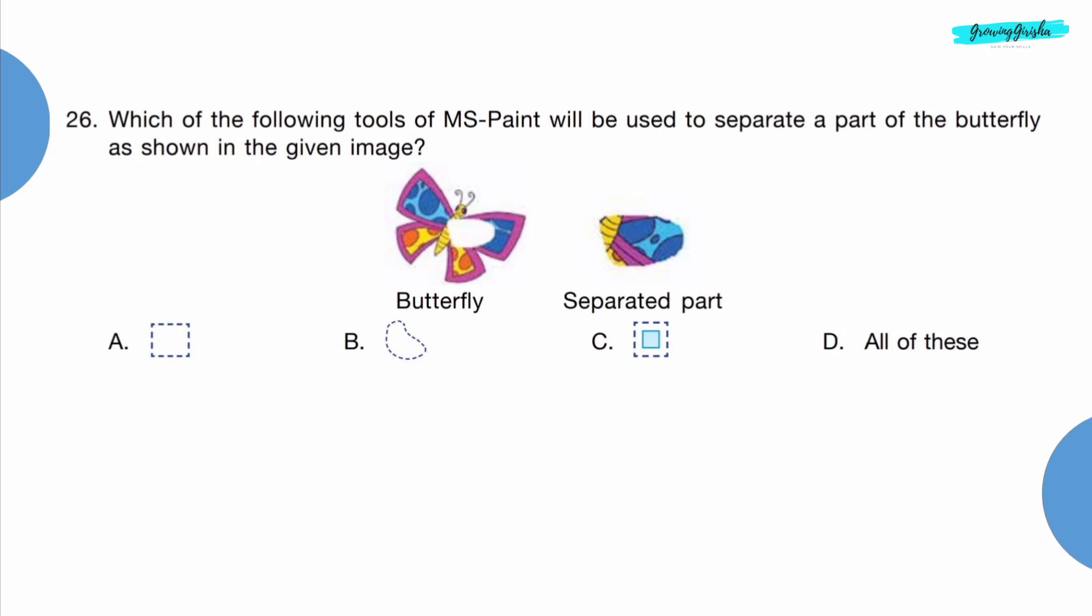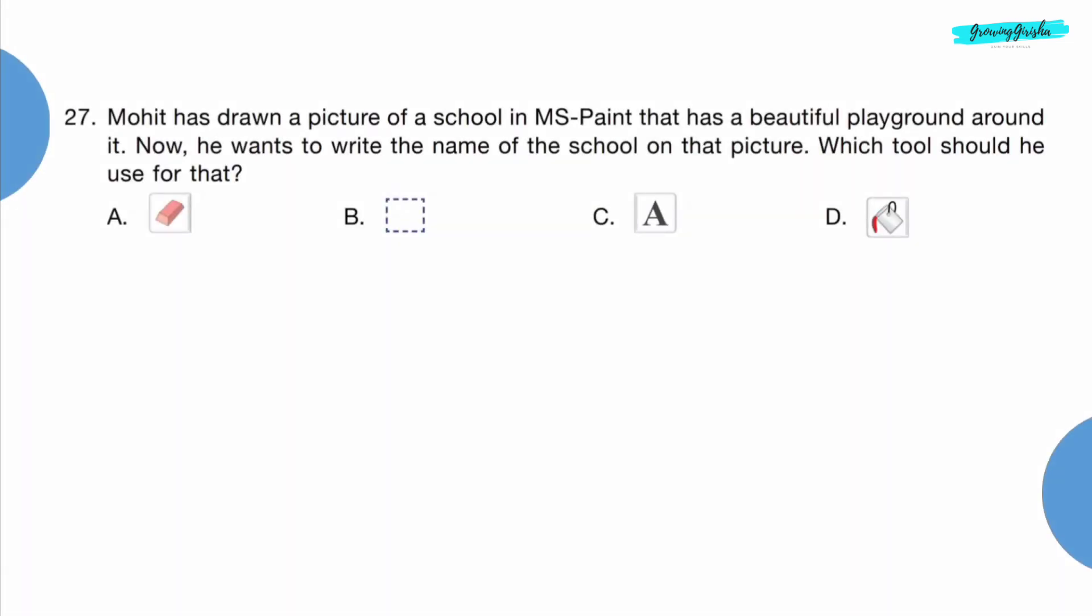Question 26: Which of the following tools of MS Paint will be used to separate a part of the butterfly as shown in the given image? Option B, lasso tool. Question 27: Mohit has drawn a picture of a school in MS Paint that has a beautiful playground around it. Now he wants to write the name of the school on that picture. Which tool should he use for that? Option C, text tool.